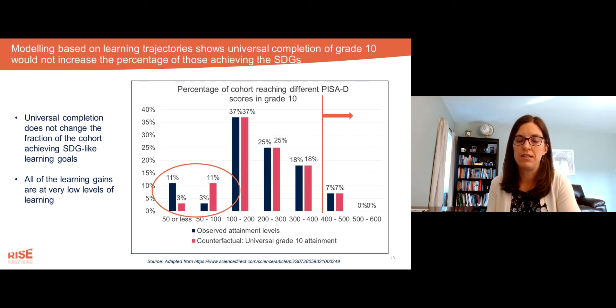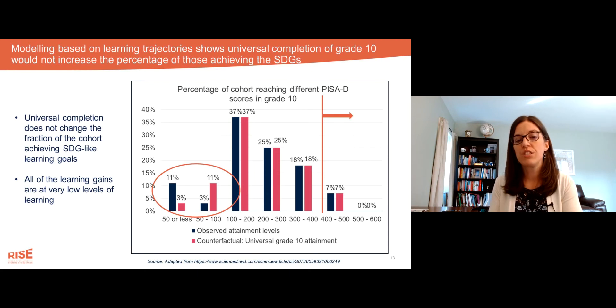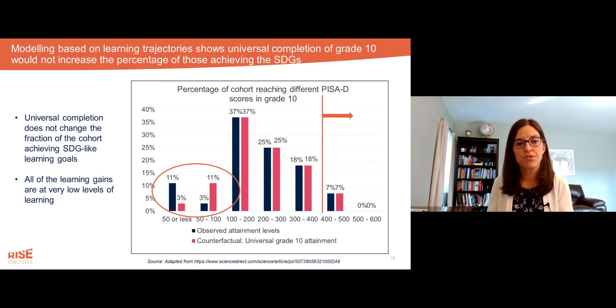In this figure, the black bars are the percent of 15-year-olds in each of these learning levels or score brackets based on current schooling attainment. These are simulations using PISA-D data.